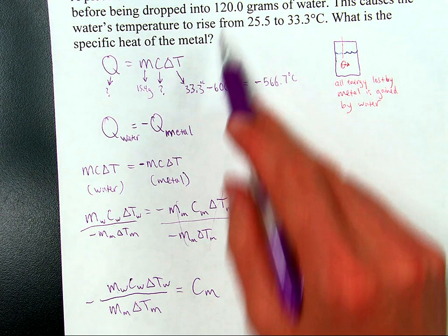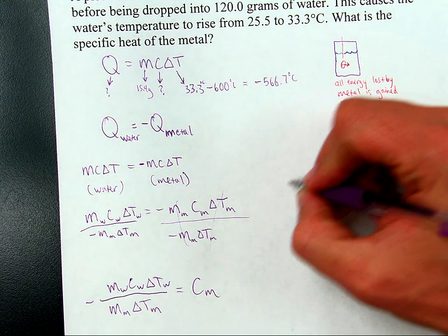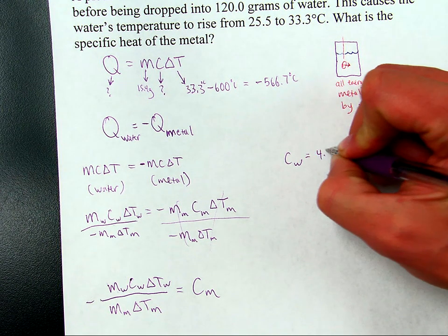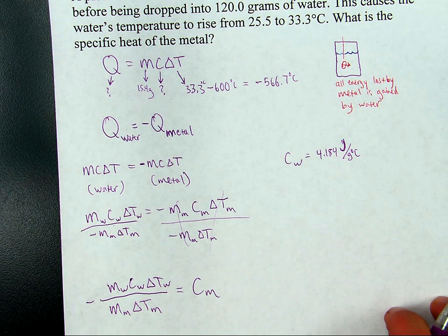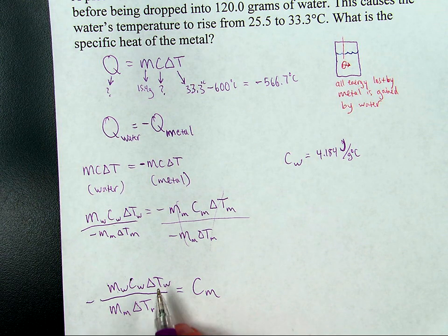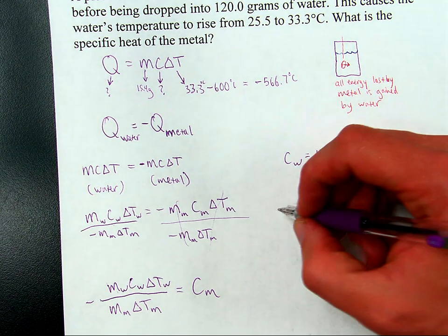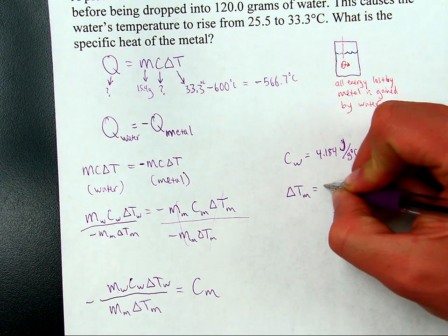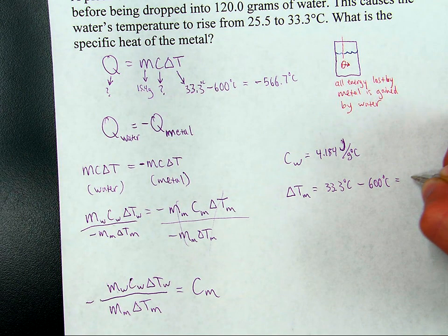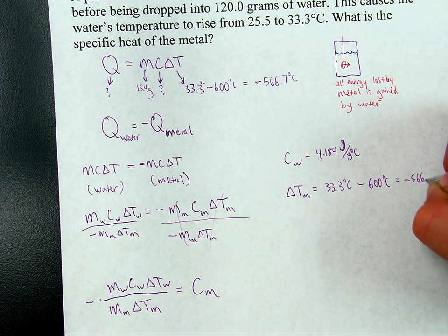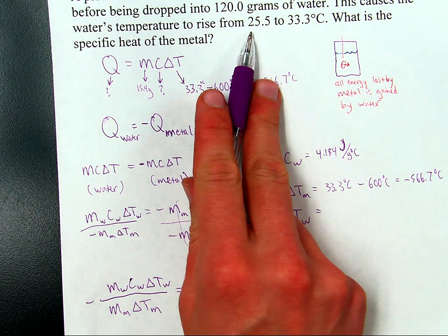Now let's go figuring out what these are. Mass of water, right here. Specific heat of water, that'll be given to you on the test. You can look it up in your book, on Google anywhere. The specific heat of water is 4.184 joules per gram degree Celsius. Delta T of water, I need to calculate that. Mass of metal, right here. Delta T of metal, calculate it over here. But just for clarity, change in temperature for metal is 33.3 degrees Celsius, that's the final temperature minus 600 degrees Celsius, the initial temperature. And that's negative 566.7 degrees Celsius. That's the delta T for metal.